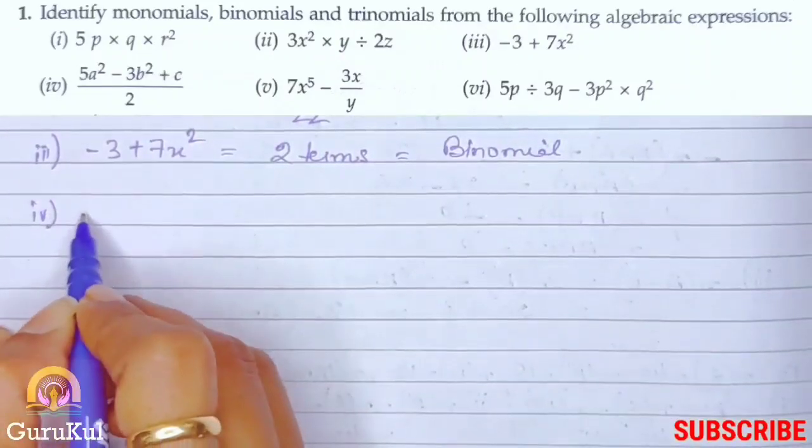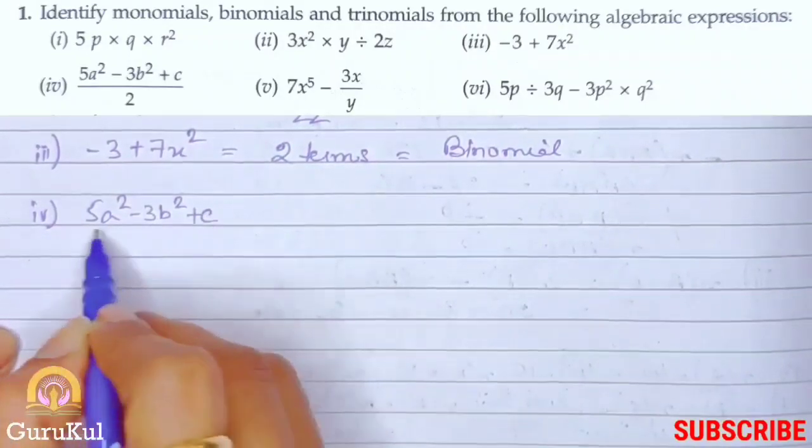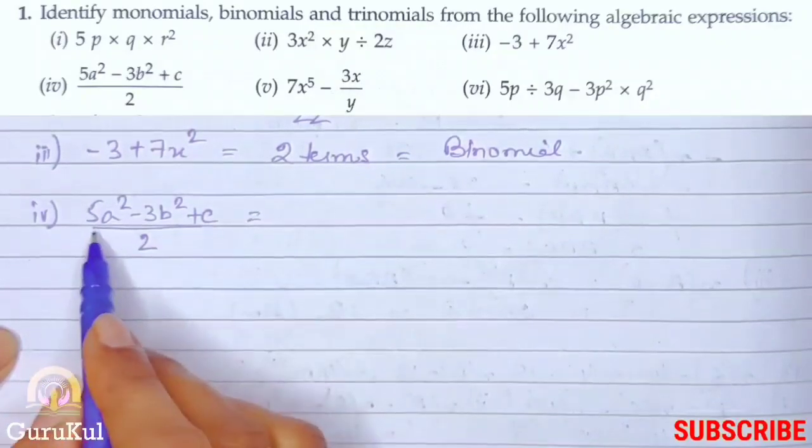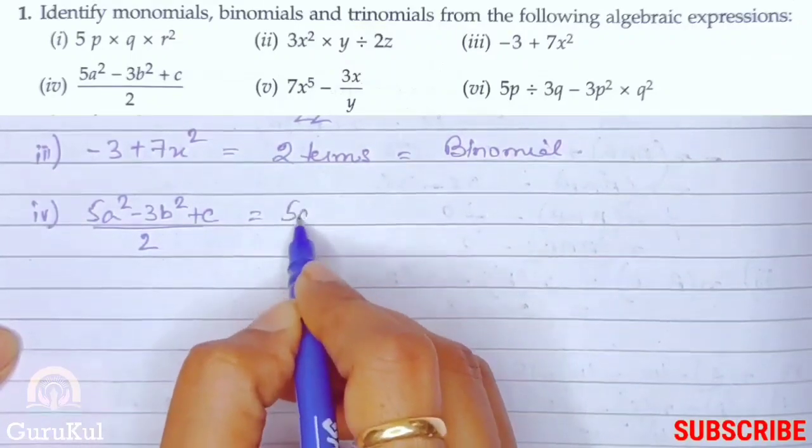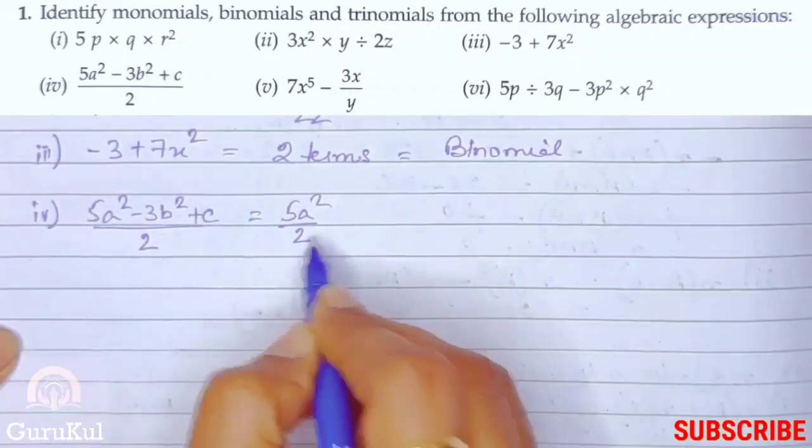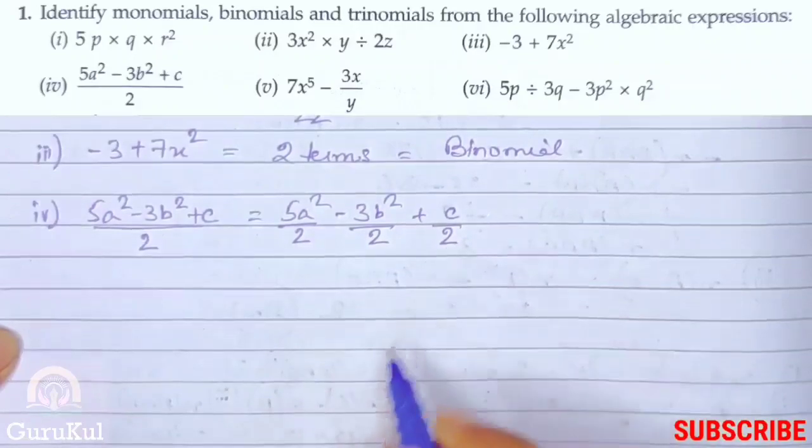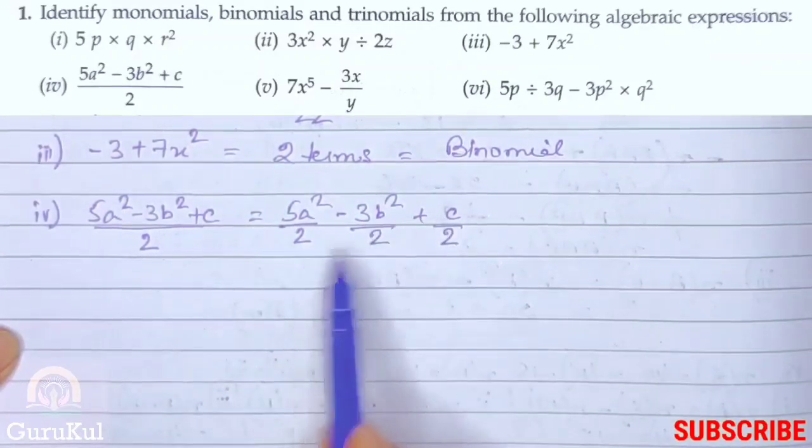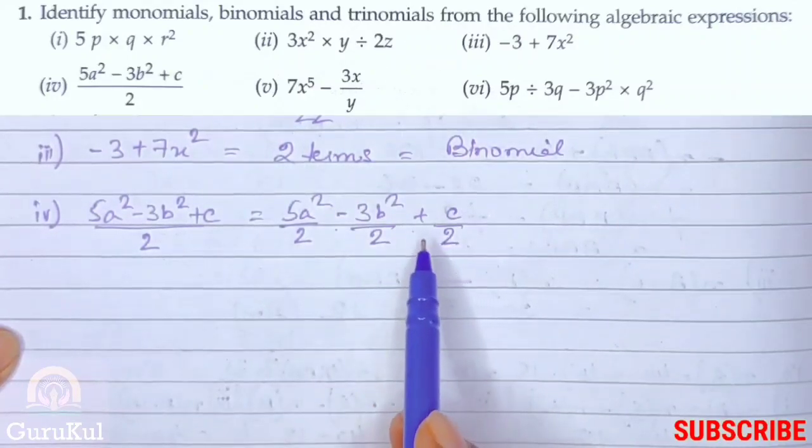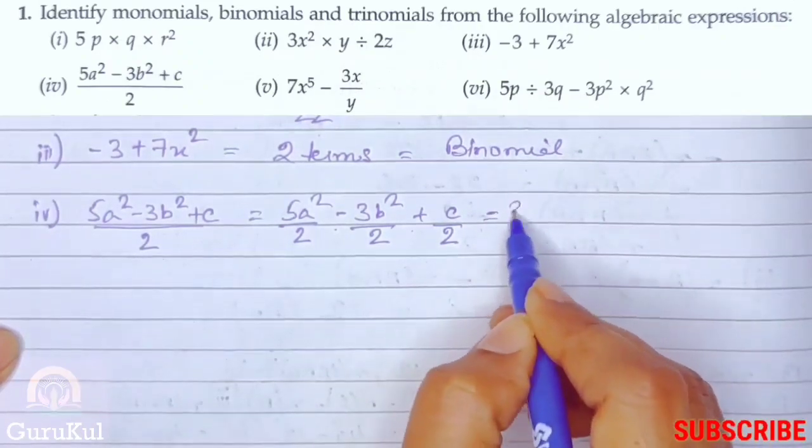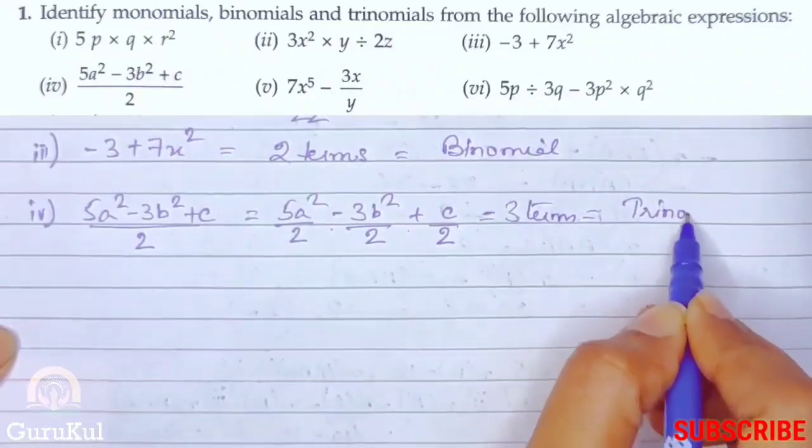Fourth one, it is 5a square minus 3b square plus c by 2. Now this entire thing is by 2. So we can write this as 5a square by 2 minus 3b square by 2 plus c by 2. See, three different fractions separated by plus and a minus sign. Three different terms. That is, three terms. Hence, we call it trinomial.